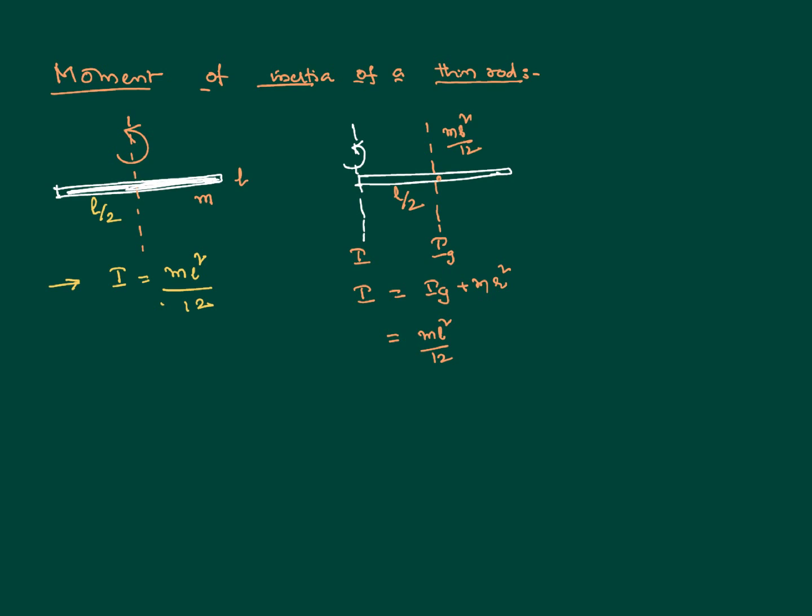Ig is mL square by 12, and r in this case is half of the length of the rod. So our answer is mL square by 12 plus mL square by 4.